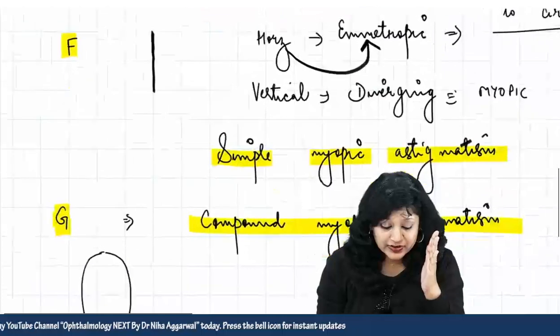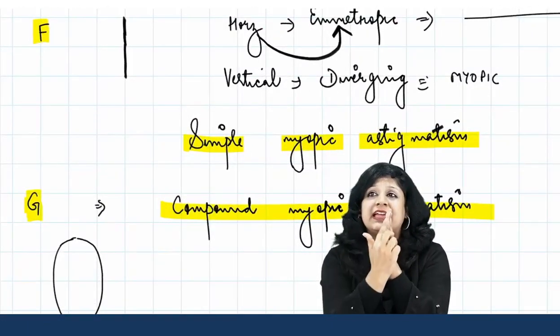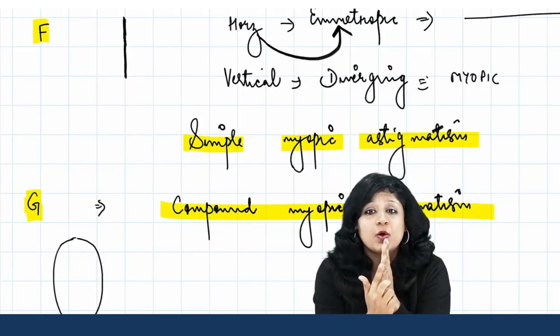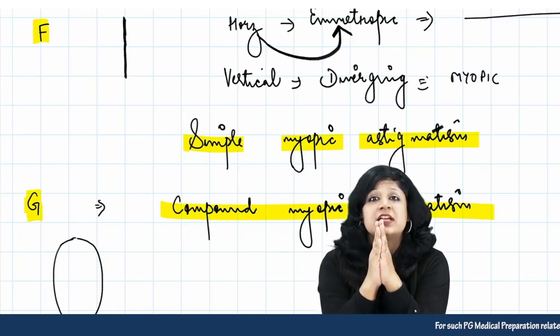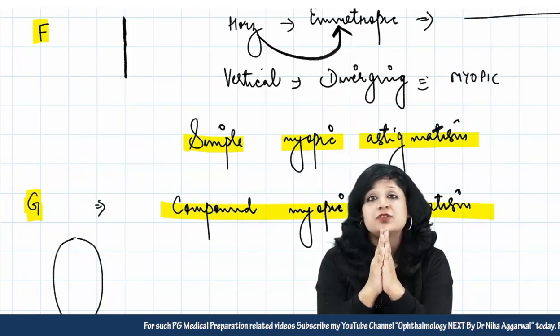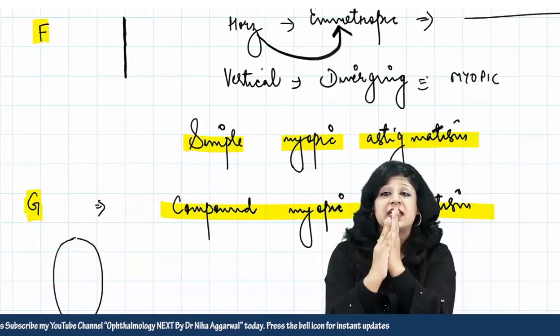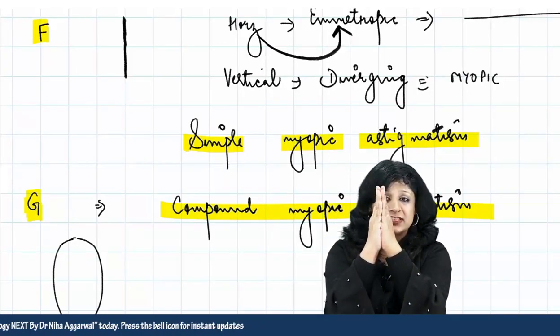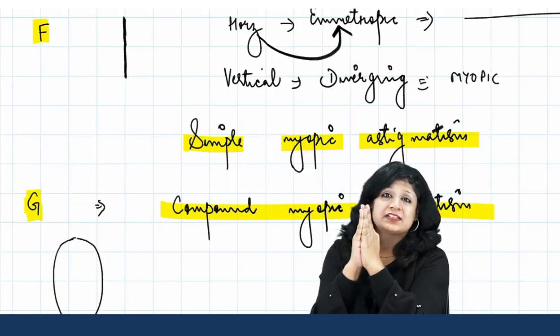Now as you reach beyond this to point F, you are getting a vertical line. What is happening? Now horizontal rays have come to focus. So it has become emmetropic again, and because it has become emmetropic, the type of astigmatism will become simple astigmatism. And can you see the vertical rays are diverging? Diverging means myopic. It becomes simple myopic astigmatism.